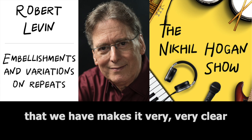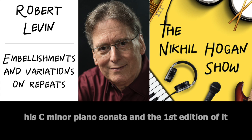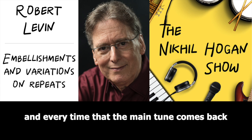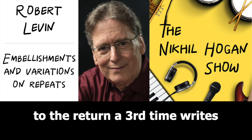The facsimile of the Mozart manuscript to his C minor piano sonata, and the first edition of it — what's very interesting is you see the manuscript for the second movement, and every time the main tune comes back, Mozart writes 'Da Capo, Seven Bars.' And then he continues with the music, gets to the return a third time, writes 'Da Capo, Seven Bars.'